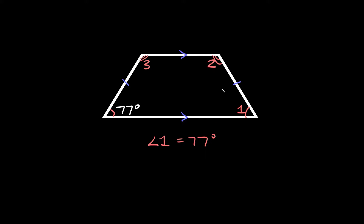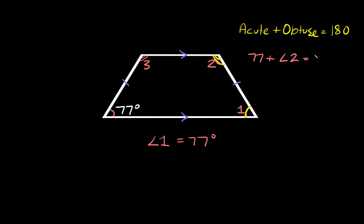Now what about angle two? The other thing we want to point out is that consecutive interior angles along the same leg — this is called the leg of a trapezoid — are supplementary. That means if you take an acute angle and add it to the obtuse angle, those should add up to 180 degrees. So we can say 77 plus angle two is equal to 180. Subtracting 77 from both sides, angle two is equal to 103 degrees.